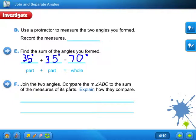Join the two angles. Compare the measure ABC to the sum of the angles of its parts. Explain how they compare. Well, the two parts equal the one whole, which was 70. That's what you started with. So if you have done it correctly, that's what you should end up with.